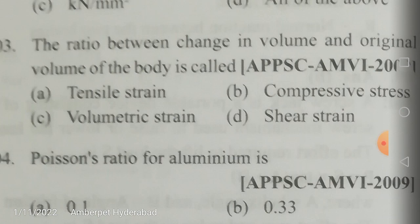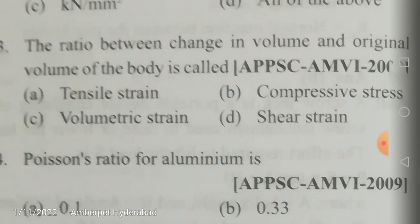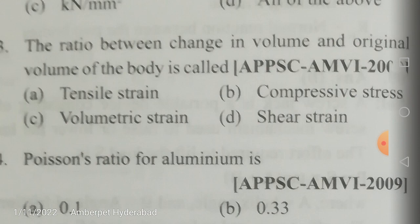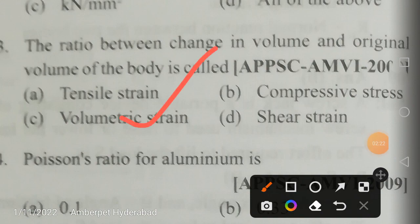Compressive stress is the compressive force divided by the area resisting failure. Shear strain occurs when a force is applied parallel to the surface, causing angular deformation or change in shape. Shear strain is responsible for change in shape, whereas linear or tensile strain is responsible for change in size. The answer here is volumetric strain.